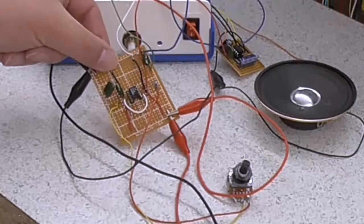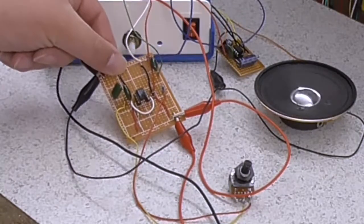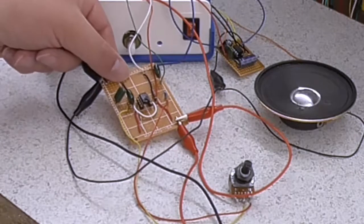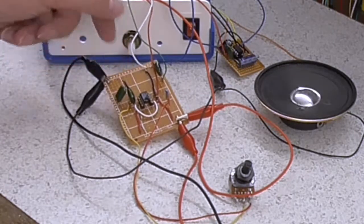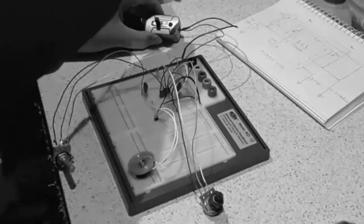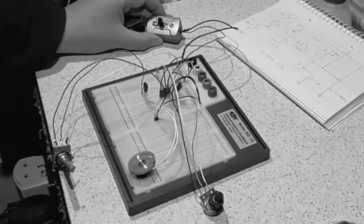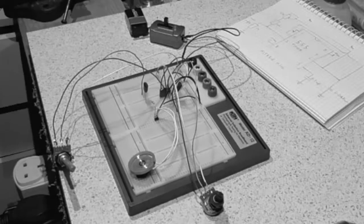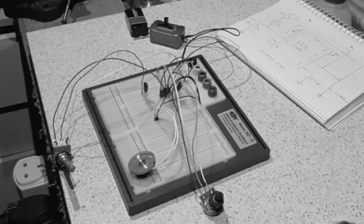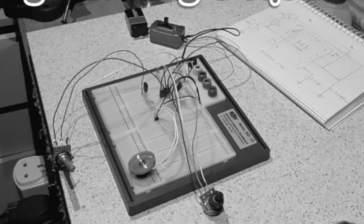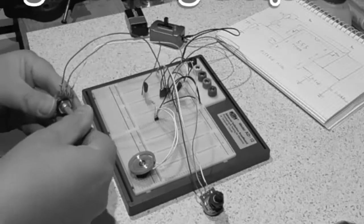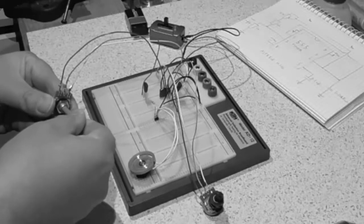This circuit here is an NE555 timer based square wave generator which I also showed in a previous video. So I just apply some power and you can hear that there is a tone coming out of the speaker. That's the volume control.